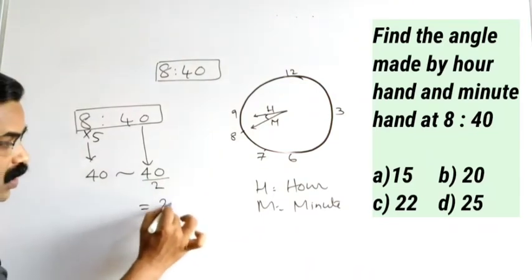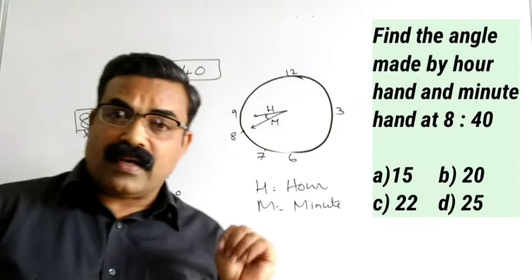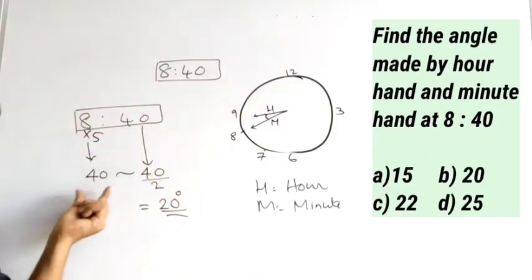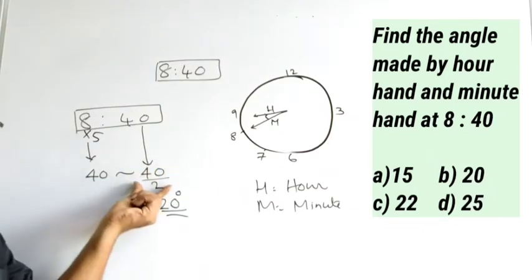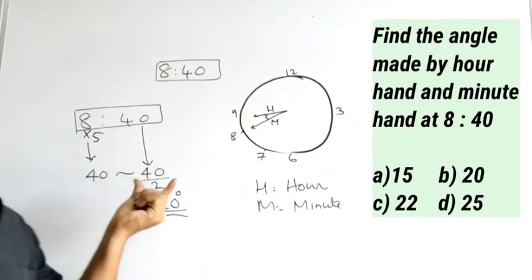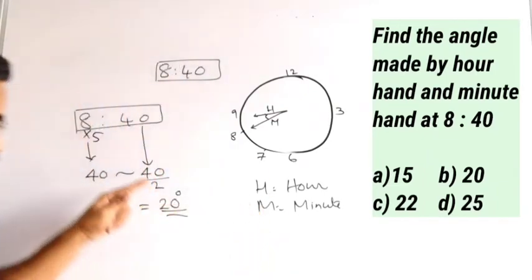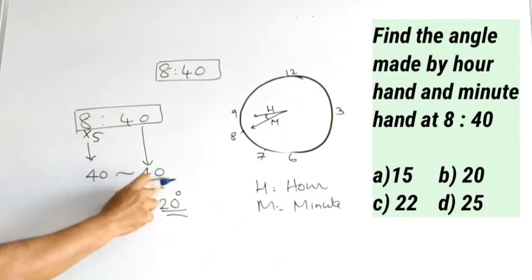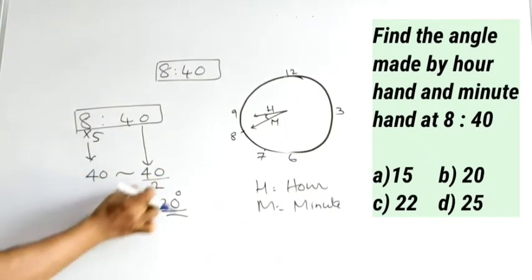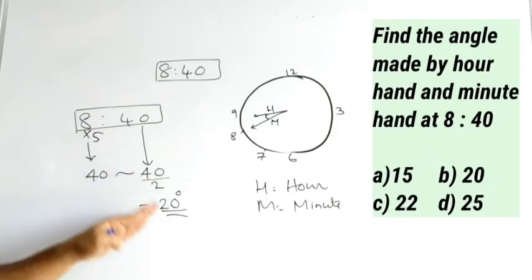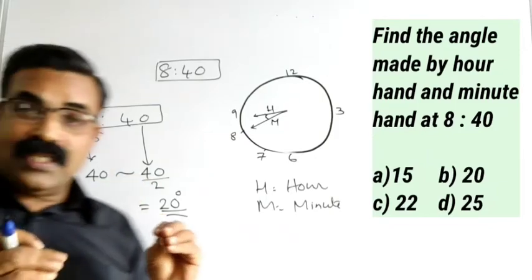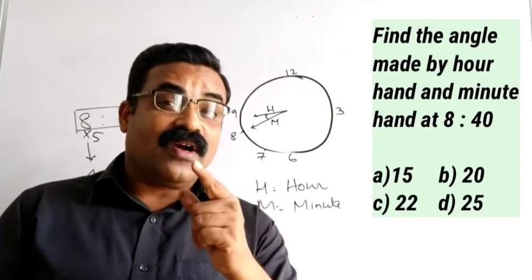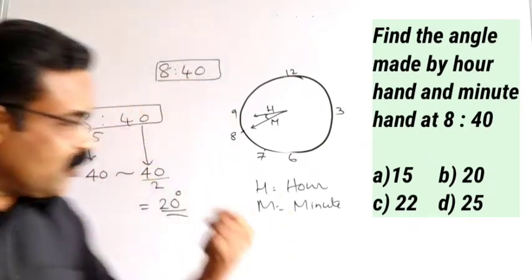Since there is no difference, just divide 40 by 2 to get the answer: 20 degrees. But I told you every time these two numbers will not be the same — there will be some difference in some questions. If there is no difference, divide by 2. We will see what to do when there is a difference in the next question.